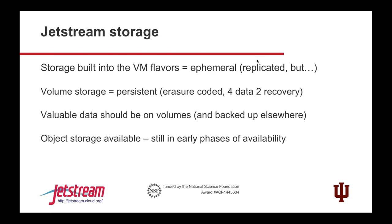A little bit about Jetstream storage: there's storage built into the VM flavors — we call that ephemeral storage. It's replicated, but it's ephemeral: if you destroy that VM, that storage is gone. Volume storage is persistent — it's erasure-coded and triple-replicated. The system has been designed so we can lose one of anything and stay up. We can lose an entire storage server with an entire rack of disks and still be up and running. That's the safety that volume storage provides.